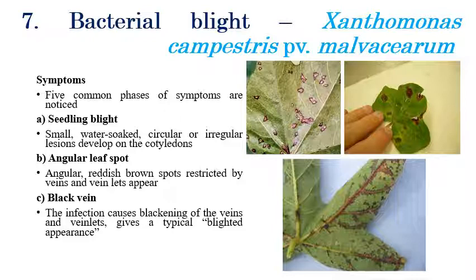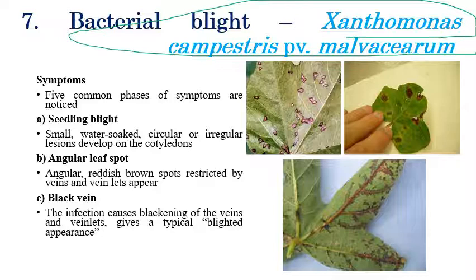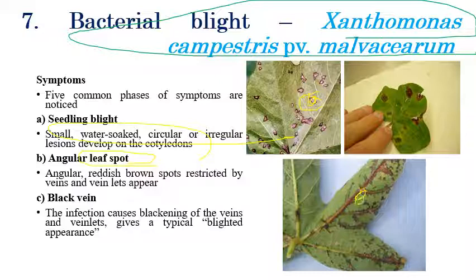The last disease is Bacterial Blight, a very important disease in cotton caused by Xanthomonas campestris pv. malvacearum. Five common symptoms can be observed. The first is seedling blight: water-soaked or circular irregular lesions can be seen on cotyledons. The second is angular leaf spot: angular-shaped spots can be observed on the lower surface of leaves, and in later stages, reddish spots can also appear on the upper surface. These angular reddish spots mainly appear in the vein regions. The third symptom is black vein: veins turn black, and veinlets also become blackened, giving a blighting appearance.